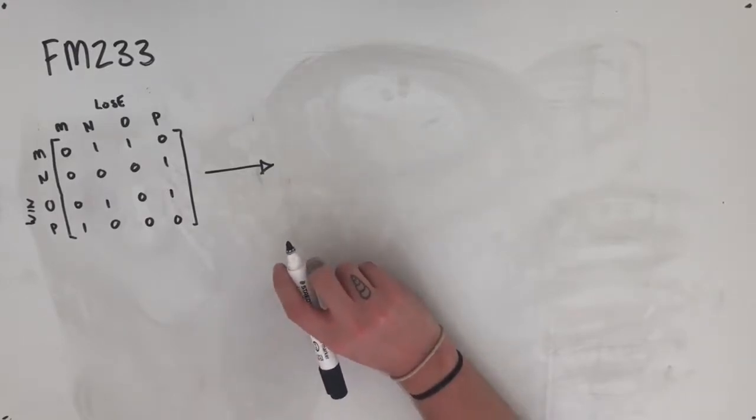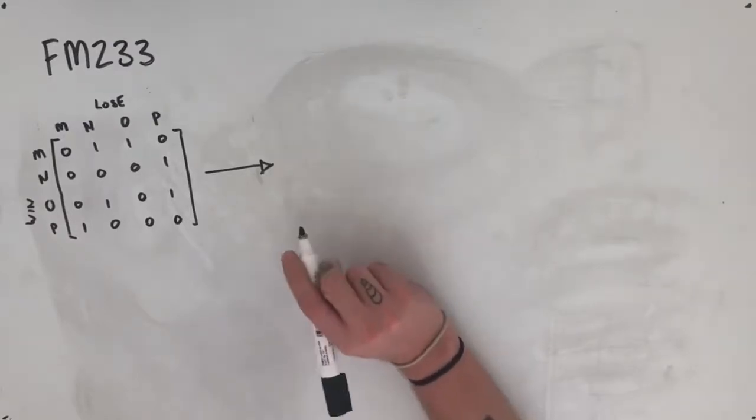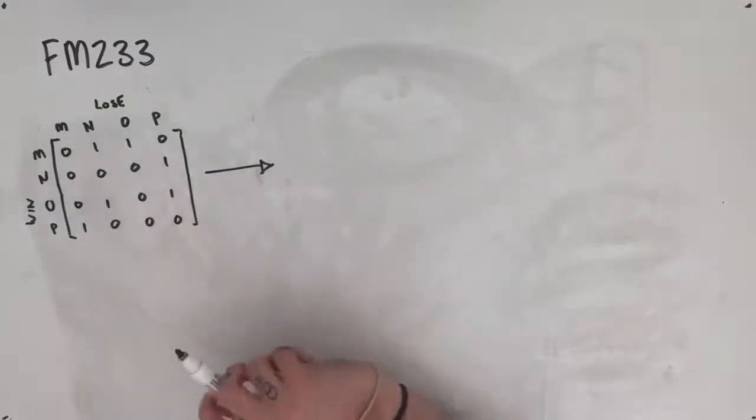This question reads: the matrix below shows the result of each match between four players M, N, O and P in a tennis tournament. And then we're given this matrix here.